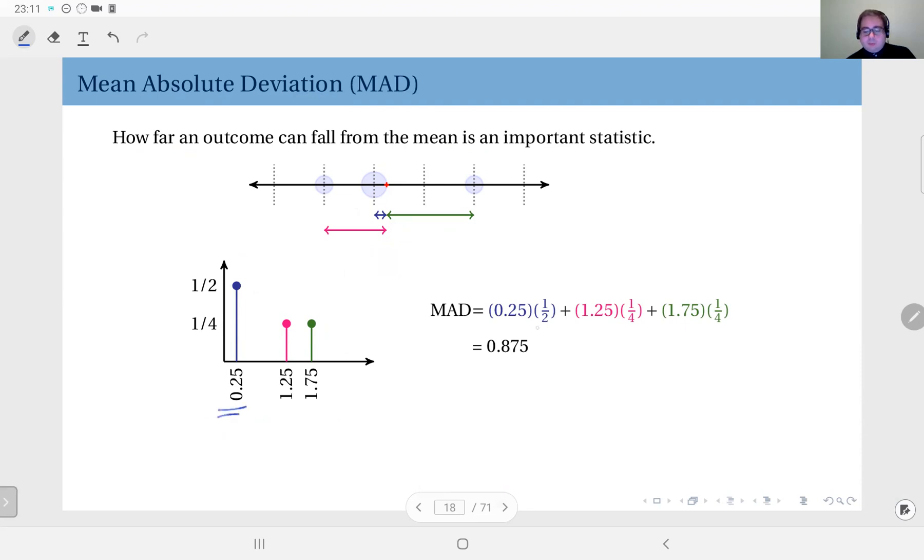So you actually get its expected value - 0.25 by one-half probability, 1.25 by one-over-four probability, 1.75 with one-over-four probability. So you get the mean absolute deviation of this distribution - this one, not this one. This is the distribution of distances; this is the actual distribution. And the mean absolute deviation turns out to be 0.875.